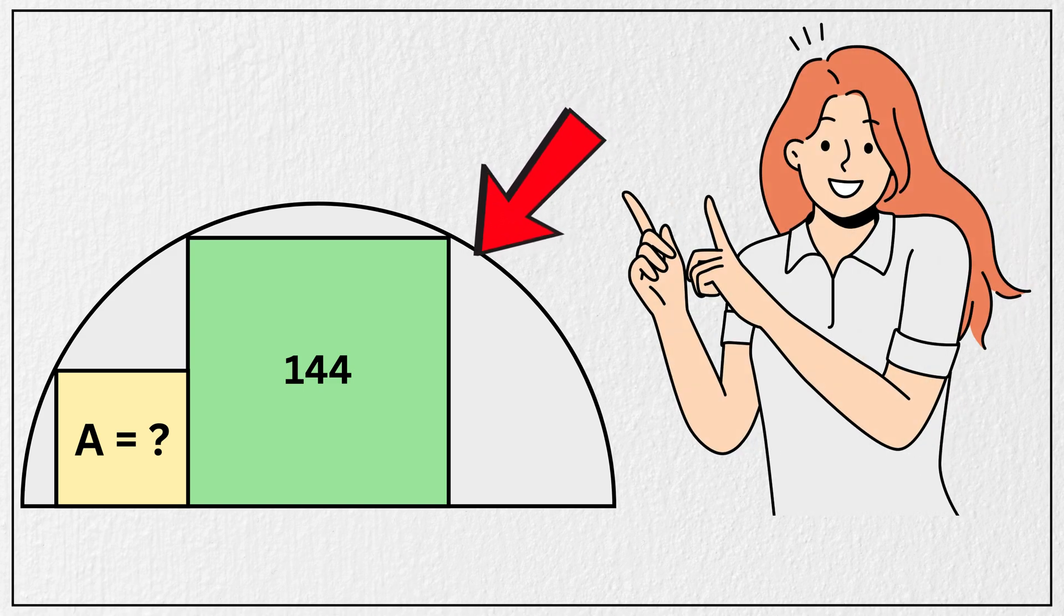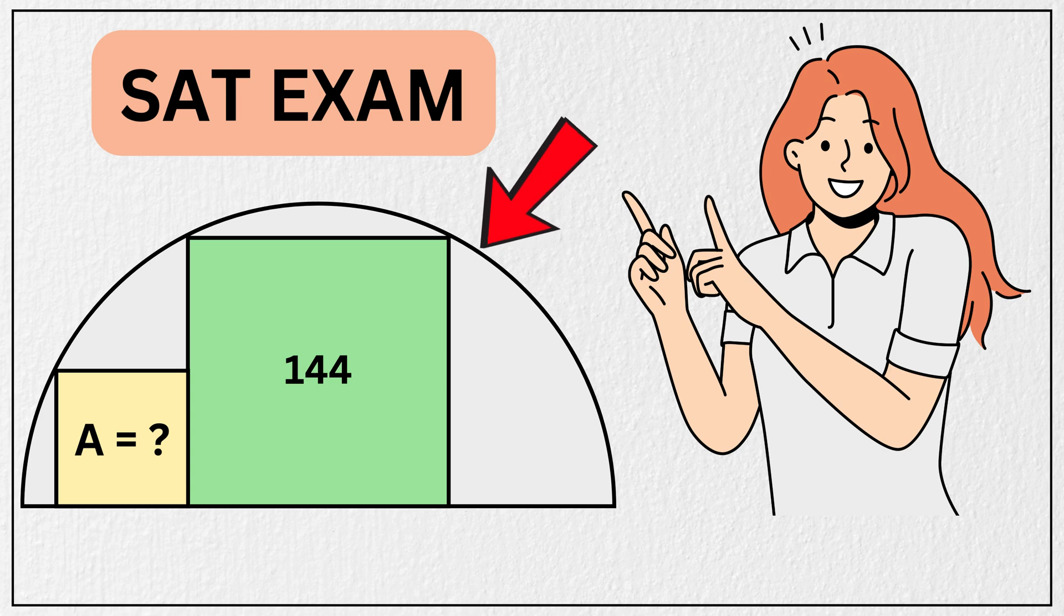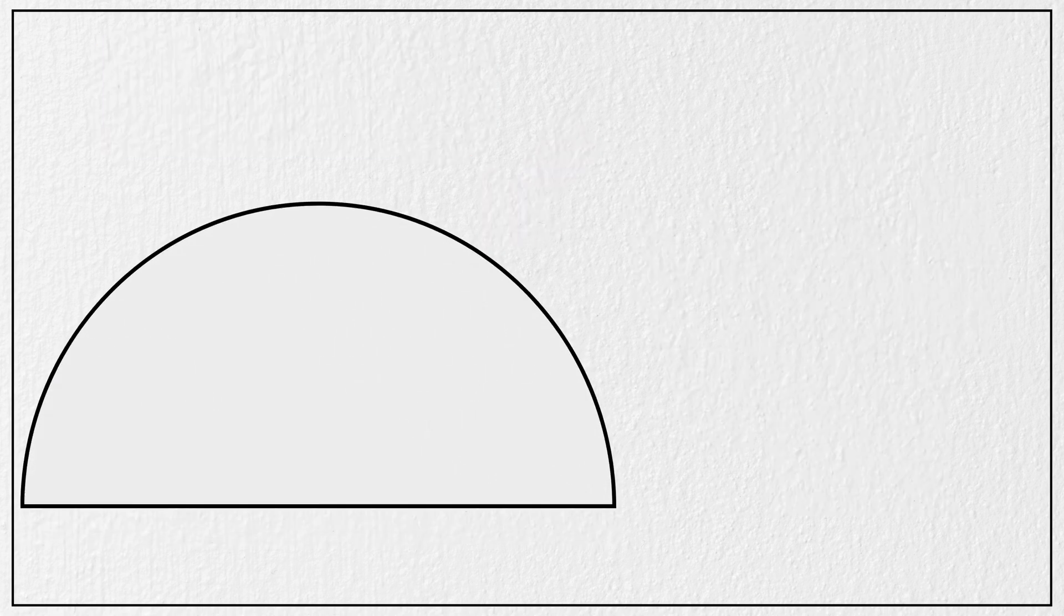Can you solve this tricky geometry question asked in the SAT entrance exam? We are given a semicircle, and inside it there is a large square positioned like this.